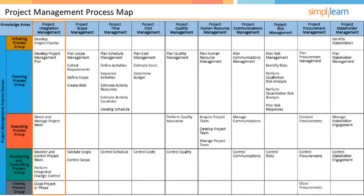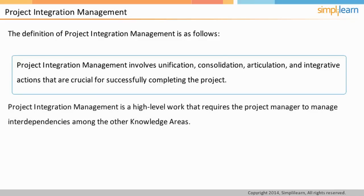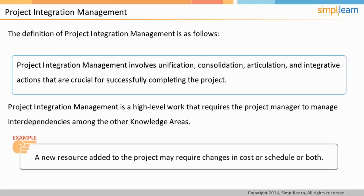Project integration management involves unification, consolidation, articulation, and integrative actions that are crucial for successfully completing the project. It is high-level work that the project manager does and involves managing interdependencies among the other knowledge areas. The other nine knowledge areas involve detailed work in a specific direction. For example, project cost management deals only with how to manage cost in a project. The project management processes do not happen independently. For example, a new resource added to the project may require changes in cost or schedule or both. In dealing with such situations, the project manager integrates the processes of project management.